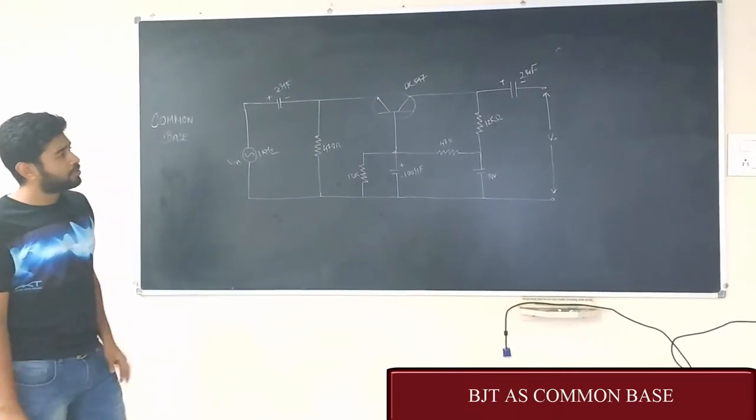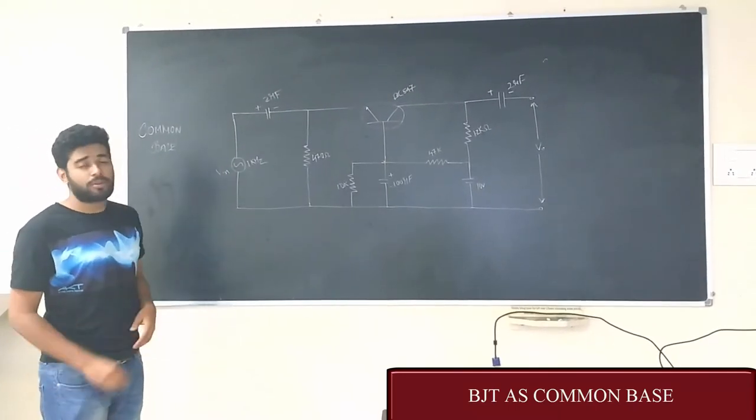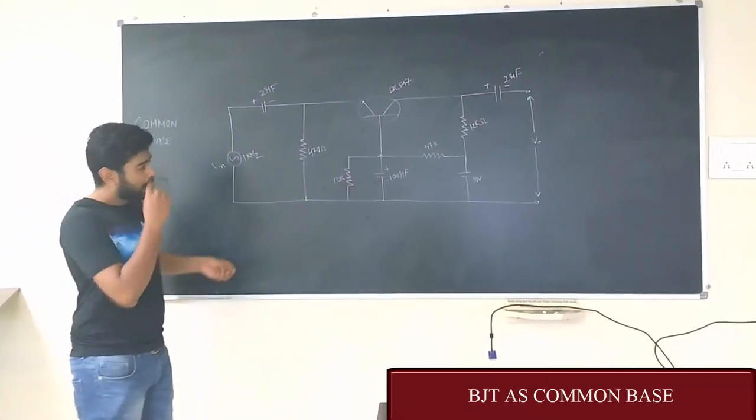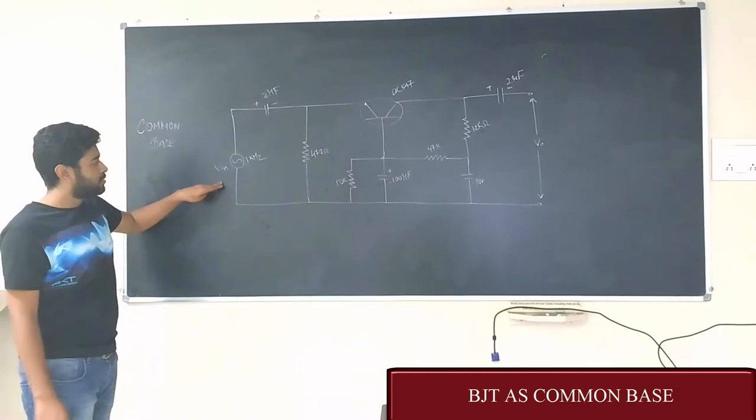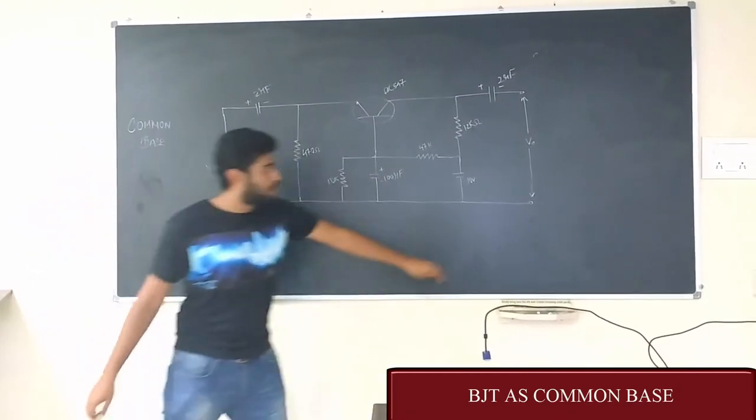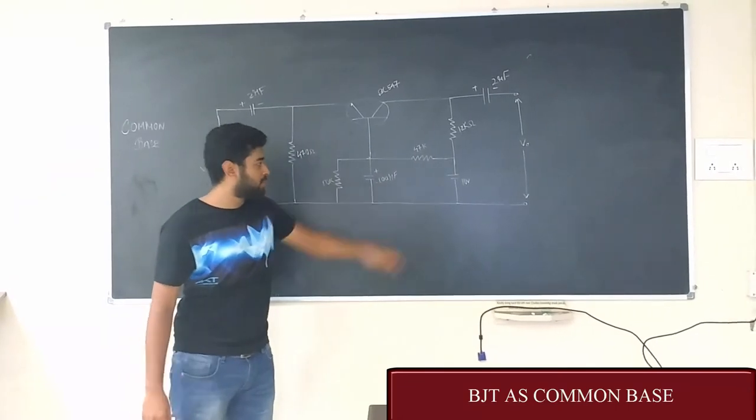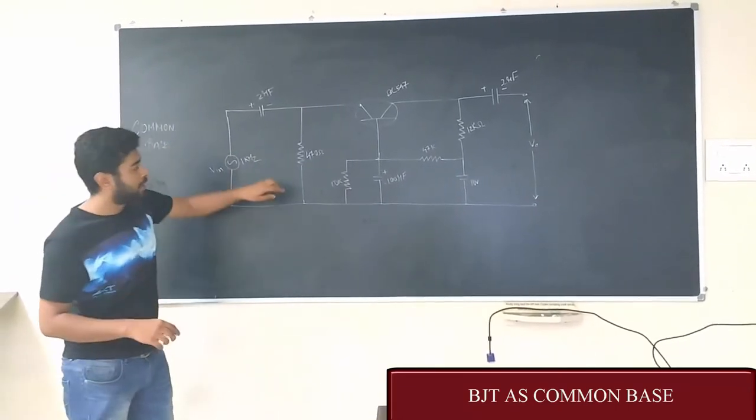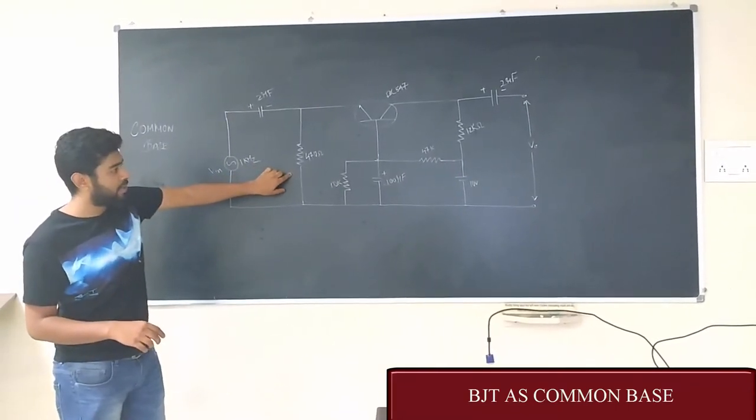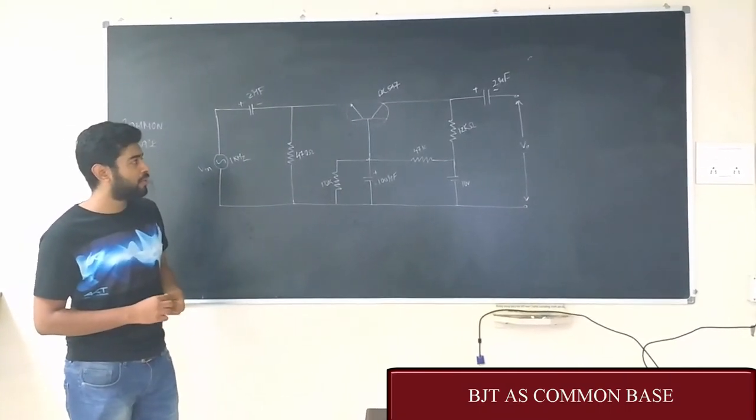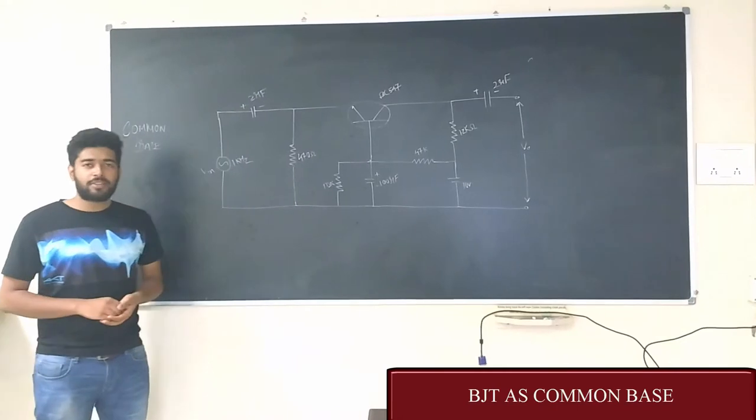We have used two other capacitors which are at input and output with the value of 2 microfarad. The input is given here which is 1kHz frequency and the output is taken over 10k and this is the 10 volt supply which we are giving. The emitter resistance is 470 ohms and there are two different resistors of 1.2k value and 47k. So that's it for the circuit diagram.